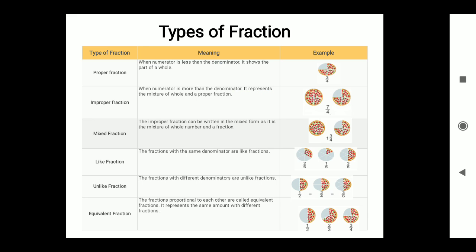Types of fractions: A proper fraction is when the numerator is less than the denominator — it shows a part of a whole. For example, 3/4. An improper fraction is when the numerator is more than the denominator — it represents a mixture of a whole and a proper fraction. For example, 7/4.